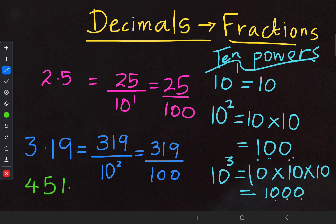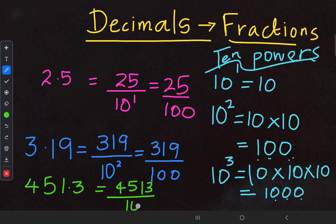For our last question in this example set: 451.3. We write the numerical value 4513. In the denominator, there is only one digit after the decimal point, so 10 to the power of 1, giving us 4513 upon 10. That's all for this conversion from decimals to fractions.